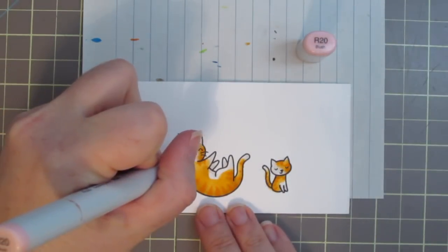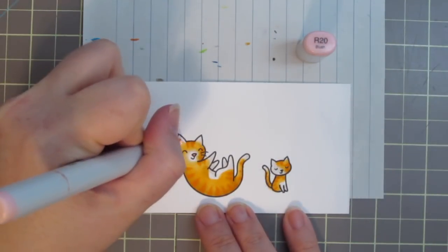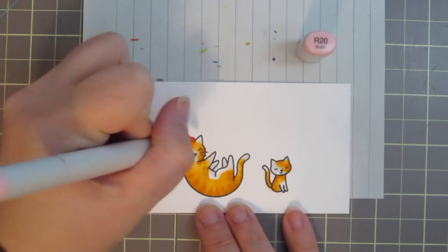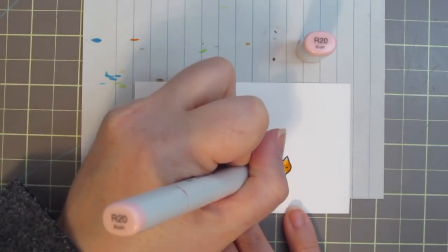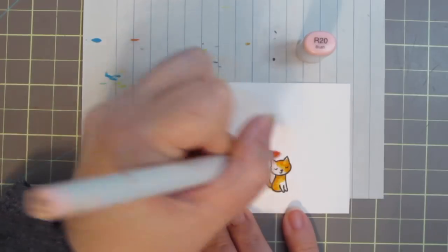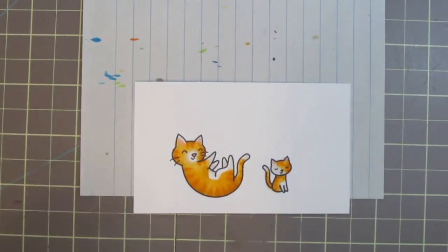I'll use my R20 to give the larger cat a pink nose and pink inside his ears, and I'll also color the kitten's ears pink. His nose is already black, so I don't need to color it in.